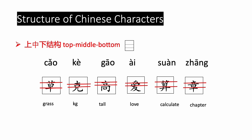Next is the top-middle-bottom structure, 上中下结构. It is similar to the last one, but it consists of three single components — one on the top, one in the middle, and one on the bottom. It can be separated by two horizontal lines, and it looks like three boxes stacked together.